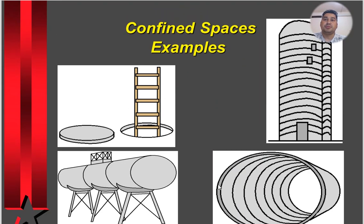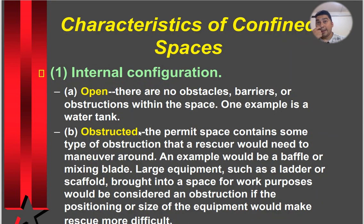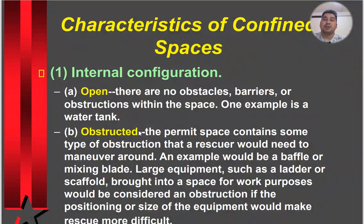Here are some images of confined spaces. They can be open — no obstacles or obstructions within the space, for example a water tank. Or obstructed — the permit space contains some type of construction that a worker would need to maneuver around, such as a baffle or mixing blade. Large equipment like a ladder or scaffold brought into a space for work purposes would be considered an obstruction.